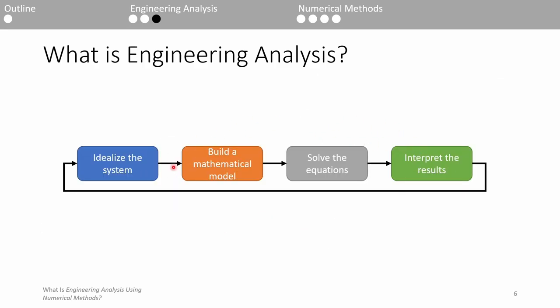This diagram summarizes engineering analysis. First, we're given some engineering system which we have to idealize. When we idealize a system, we basically make some assumptions about its behavior to simplify the problem. For example, in basic physics, we often neglect air resistance and projectile motion. Another common idealization is representing an object as a point mass.